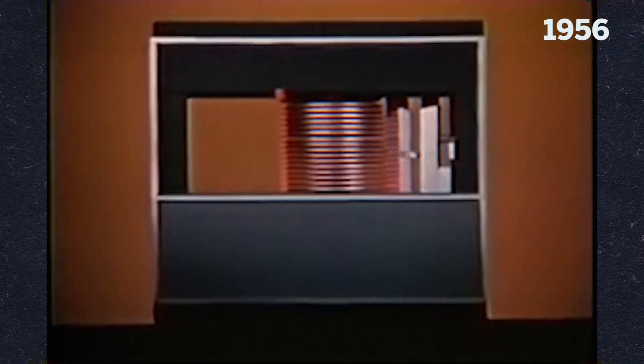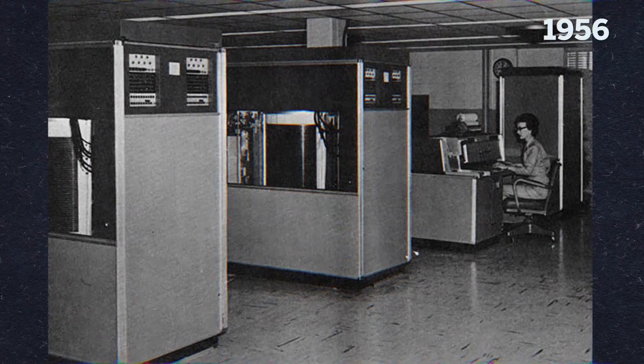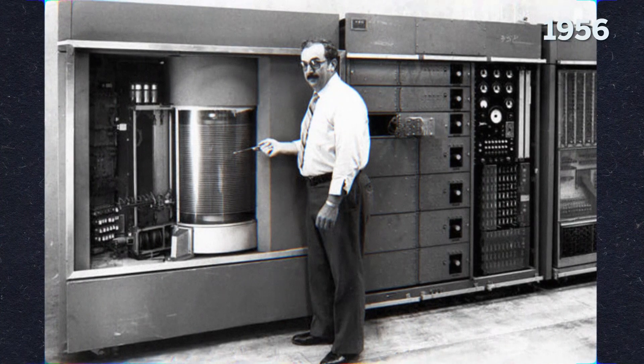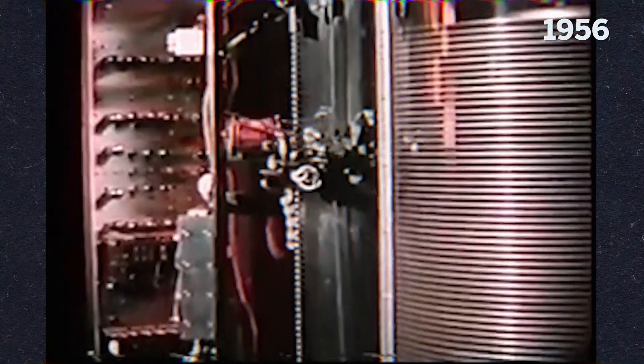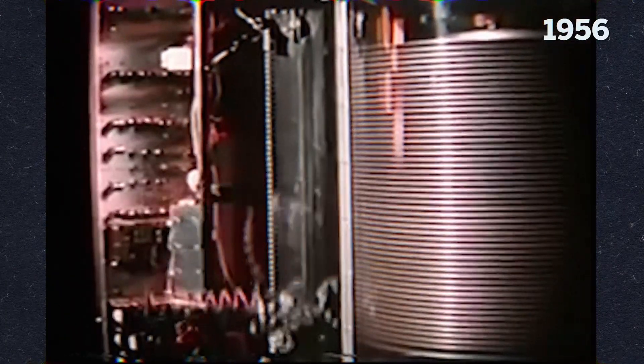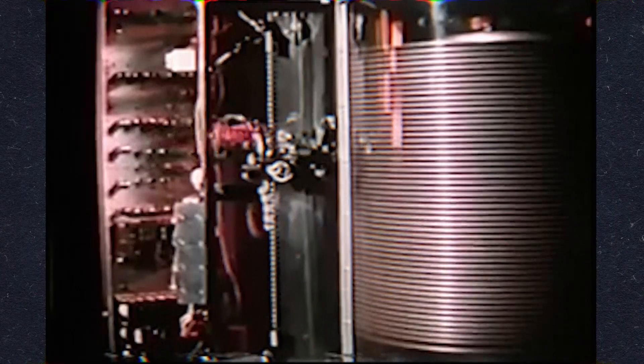It was 1956 when the IBM 305 Ramac introduced the first magnetic disk storage unit. Two washing machine-sized hard drives with a storage capacity of 5 megabytes spread across 50 24-inch disks. Things have shrunk down a bit over the years, thankfully, with pocket-sized HDDs arriving in the mid-noughties.